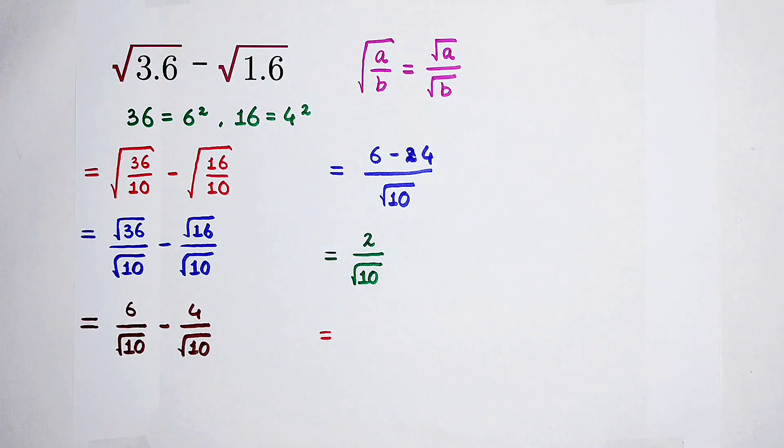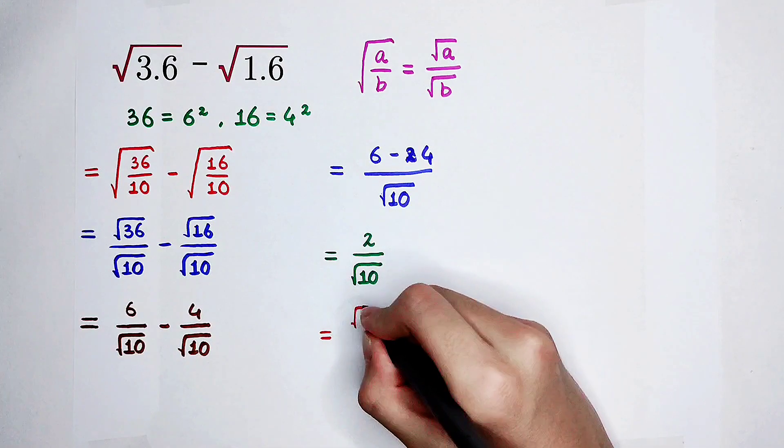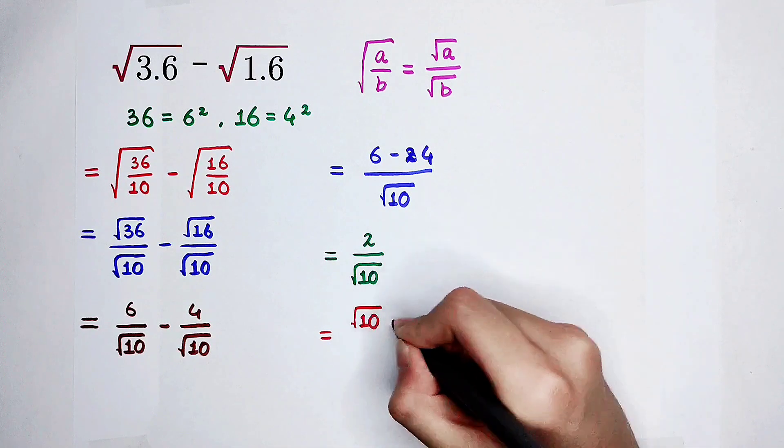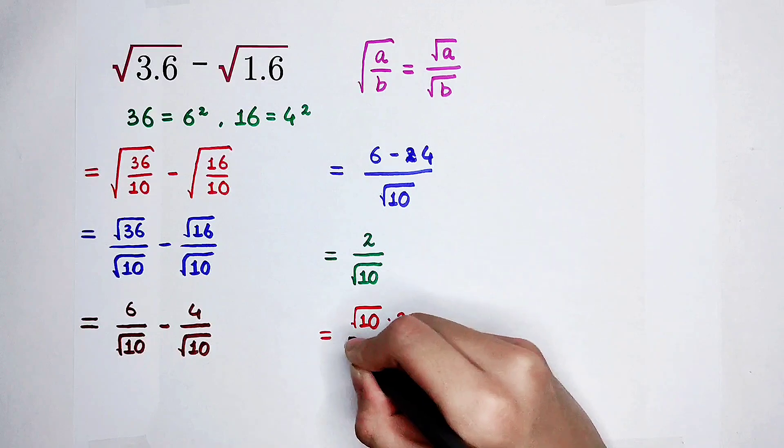Of course, now, we can multiply by square root of 10 on the denominator, and also on the numerator.